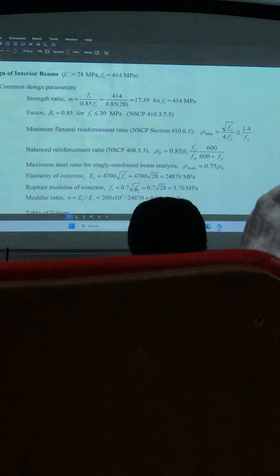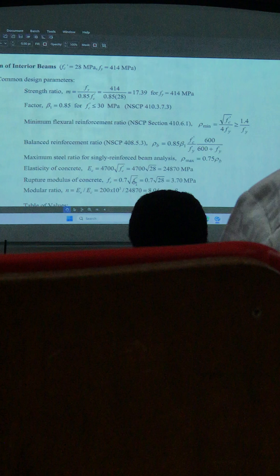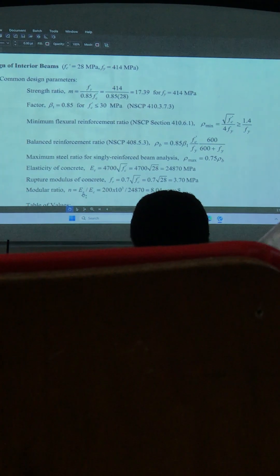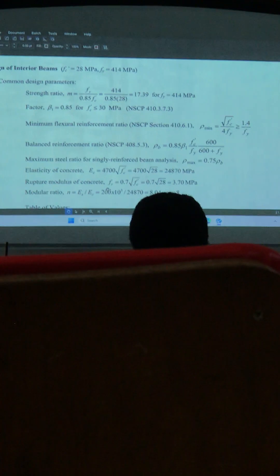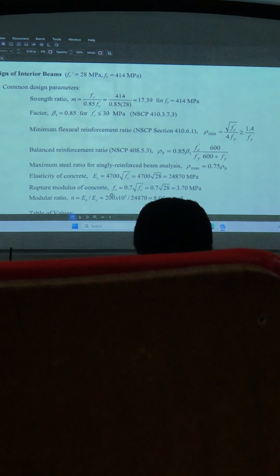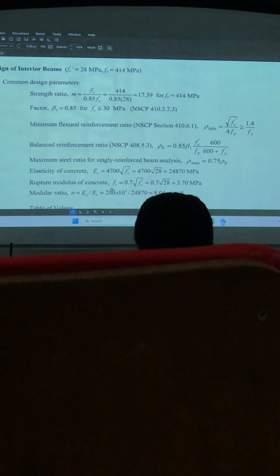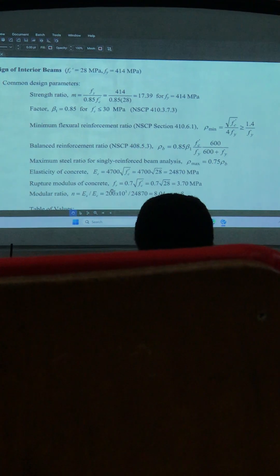So 0.7 times the square root of FC'. Then we also compute the angular ratio, which is the ratio of the elasticity of steel to that of concrete, which are what we call the common design parameters.